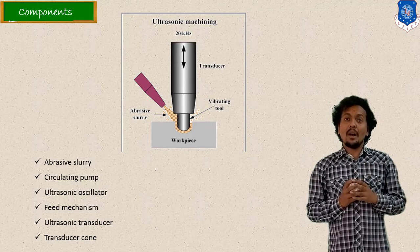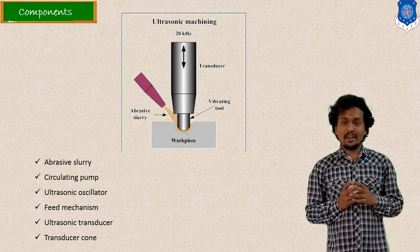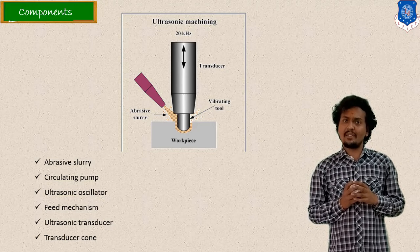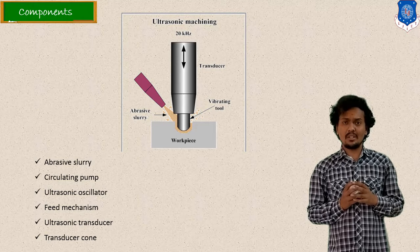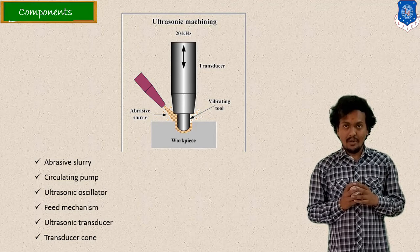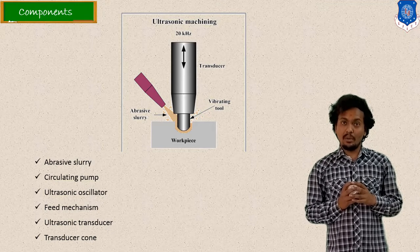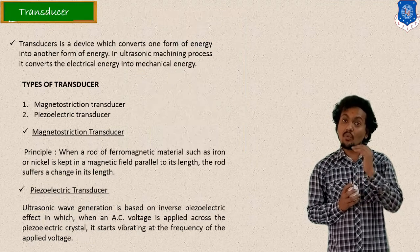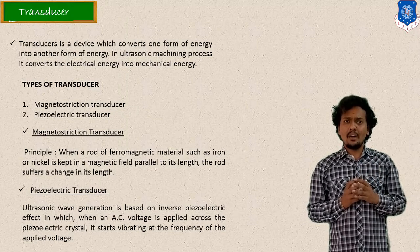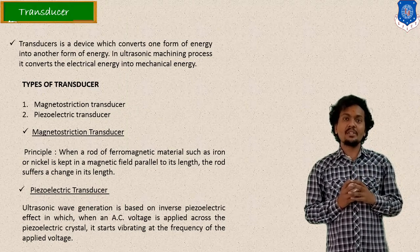So here in this setup, transducer concept is also mentioned, abrasive slurry is also mentioned. So here I mentioned the various components like transducer, slurry, and your clamping mechanism, etc. So the tool is also important to remove the material or say to fracture out the material. So here, let us start discussion on various components in detail.